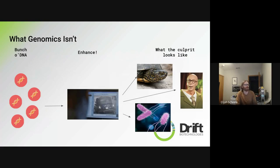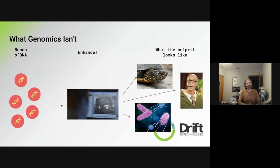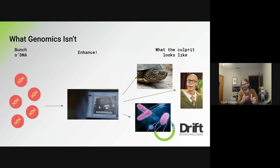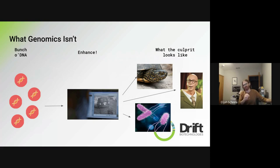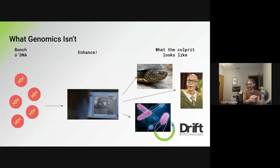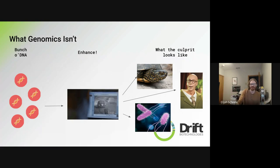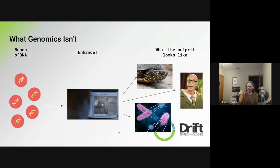Let's talk about what genomics isn't. This is the CSI effect — people think you get a bunch of DNA, some weird bioinformatics algorithm runs similar to the CSI 'enhance' on an image, and at the end it tells you exactly what organism the DNA came from or what the DNA is supposed to be doing in an organism — whether it's making it a turtle or identifying Salmonella, which is quite frequently found in turtles.